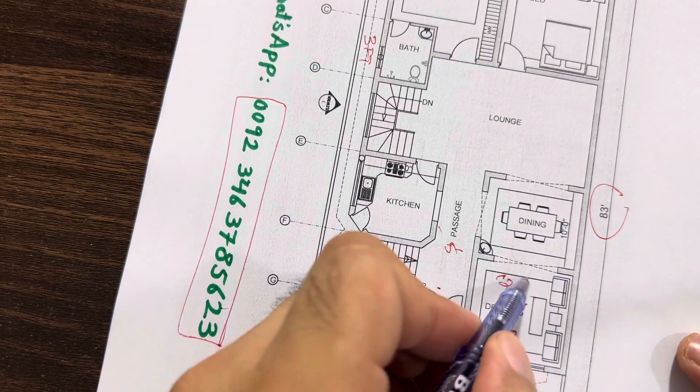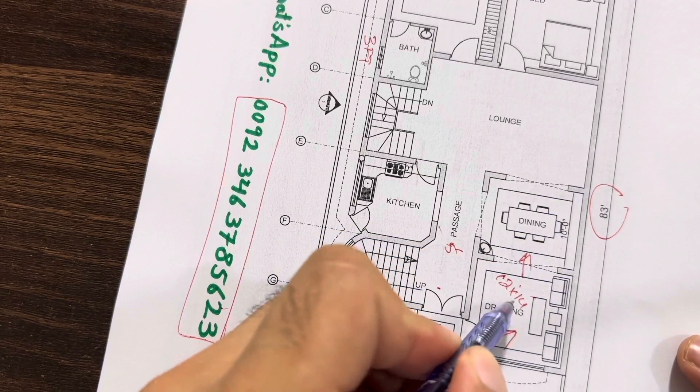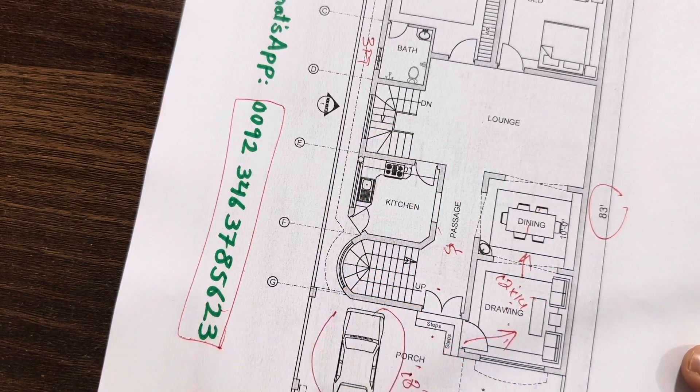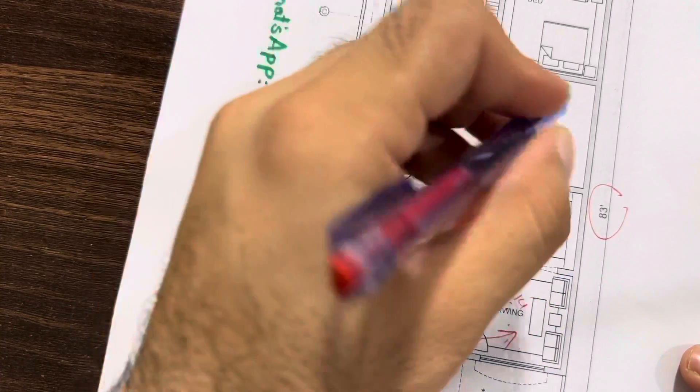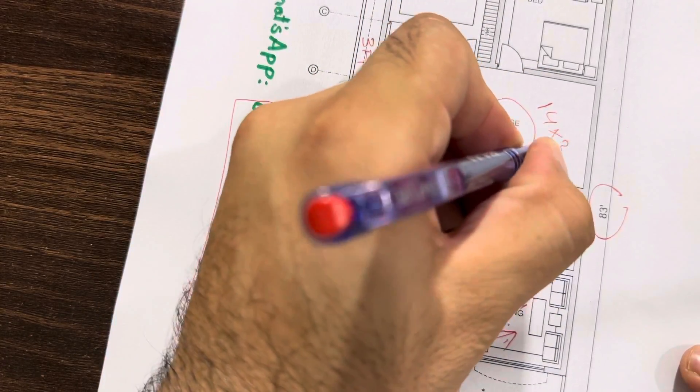Next, you can see this is access from this dining to this kitchen or from this kitchen to this dining. And here, you can see also this is access to this lounge. Size is 14 feet by 32 feet.